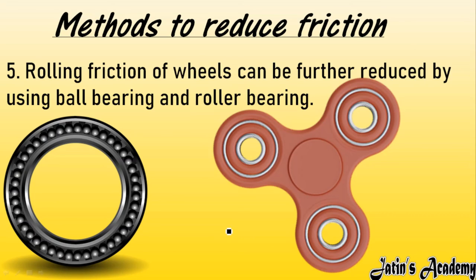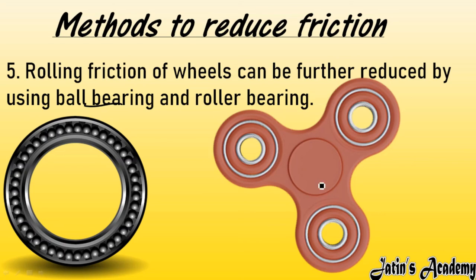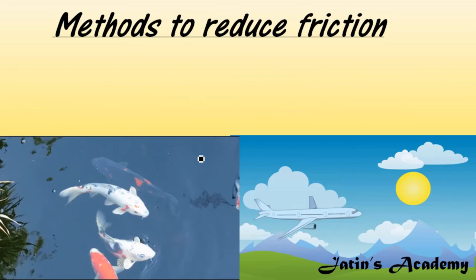Fifth method: use ball bearings to further reduce rolling friction. Ball bearings are found in drawers — they make opening and closing very easy. Without ball bearings, you would need much more force to pull the drawer out. A fidget spinner also uses ball bearings at its center, making it easy to rotate with very little friction.